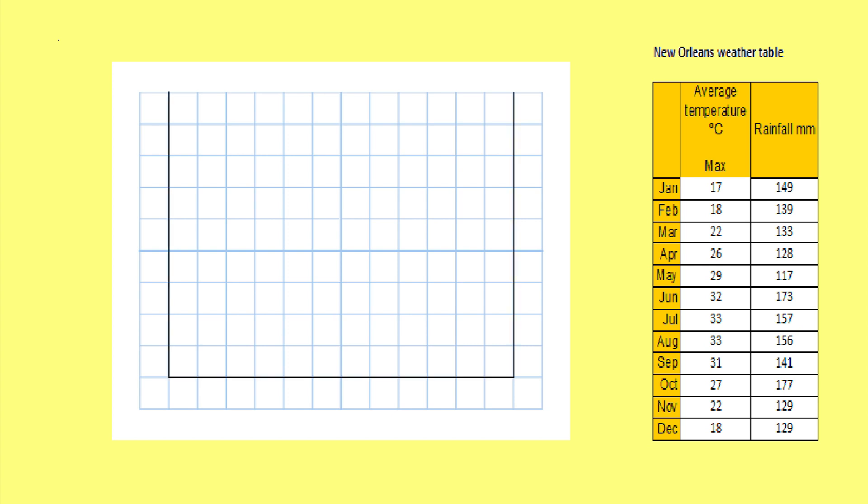First you must use a ruler to draw your X and your two Y axes. We will divide the X axis into 12 for the different months of the year and then label them January to December.